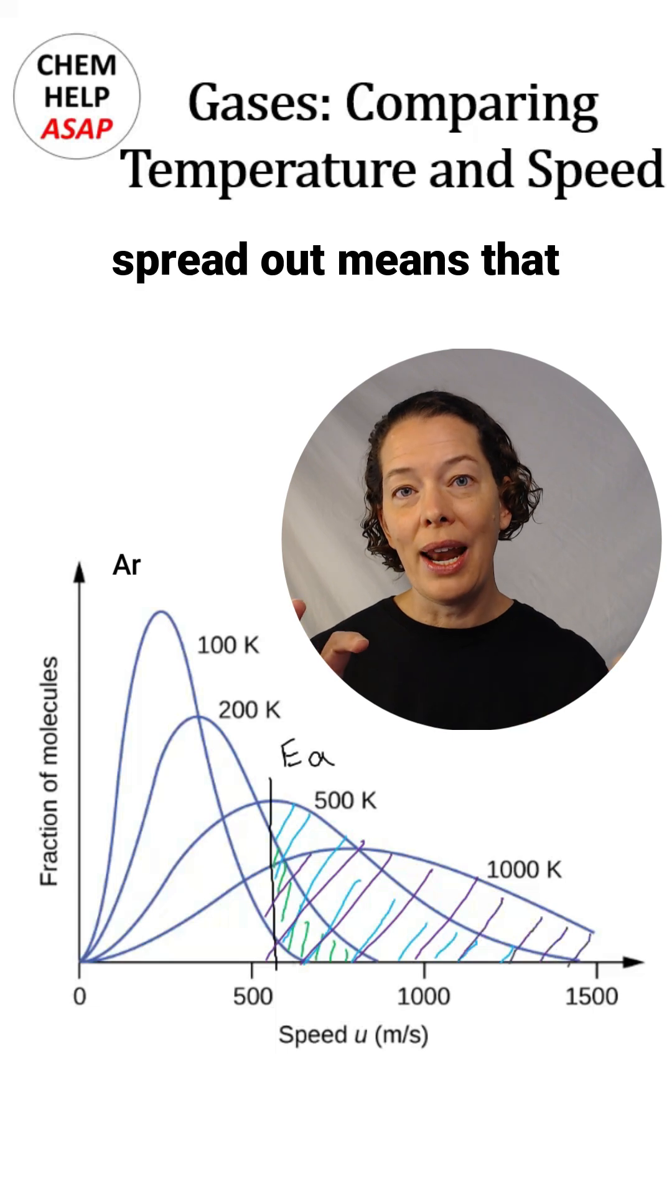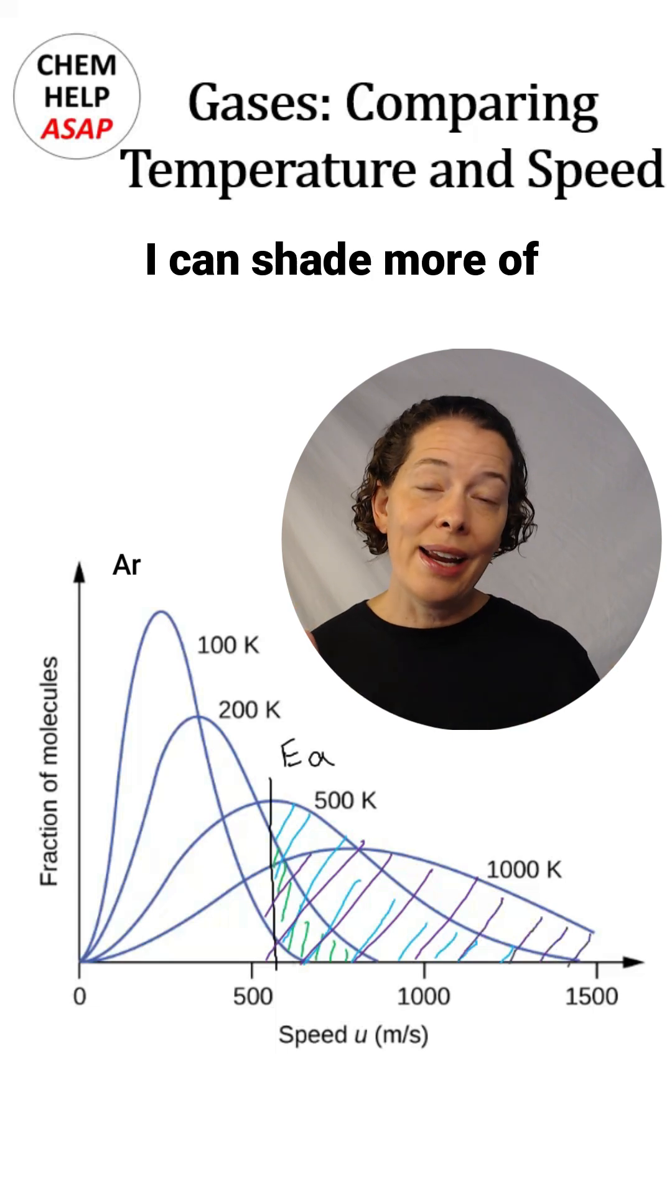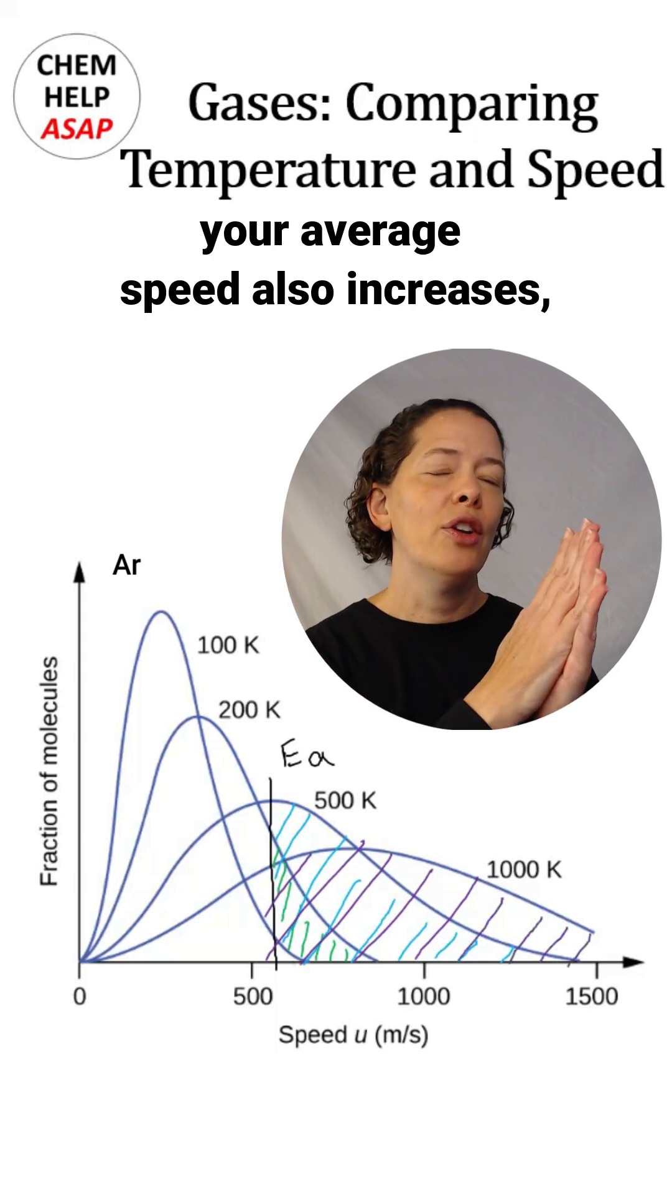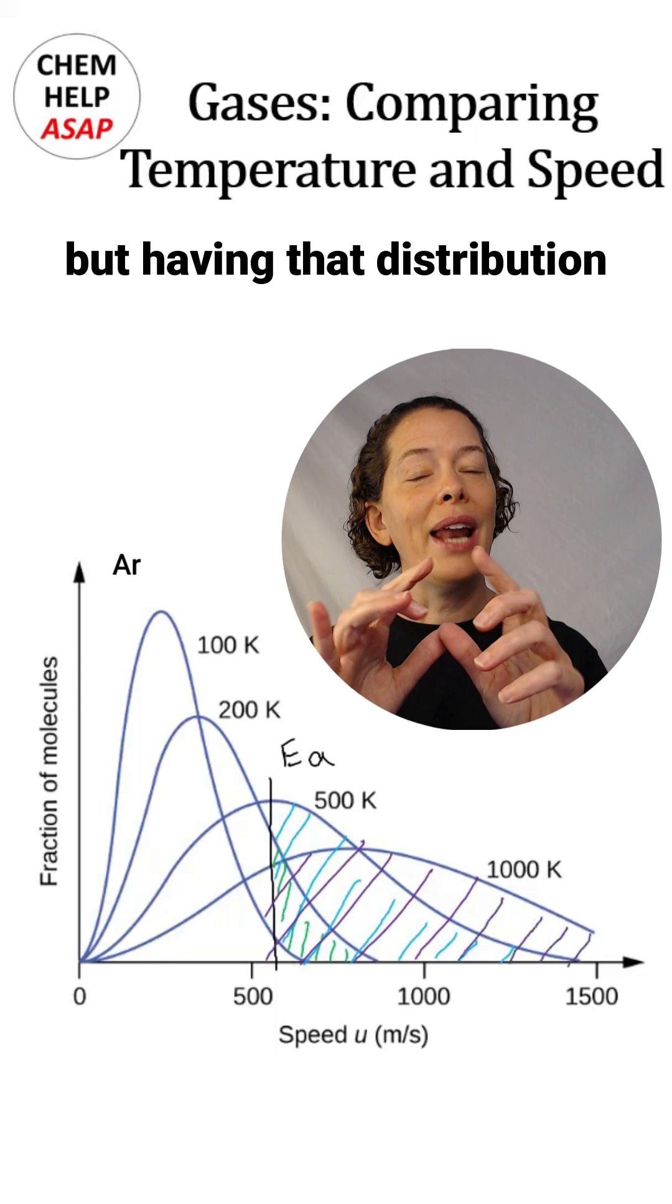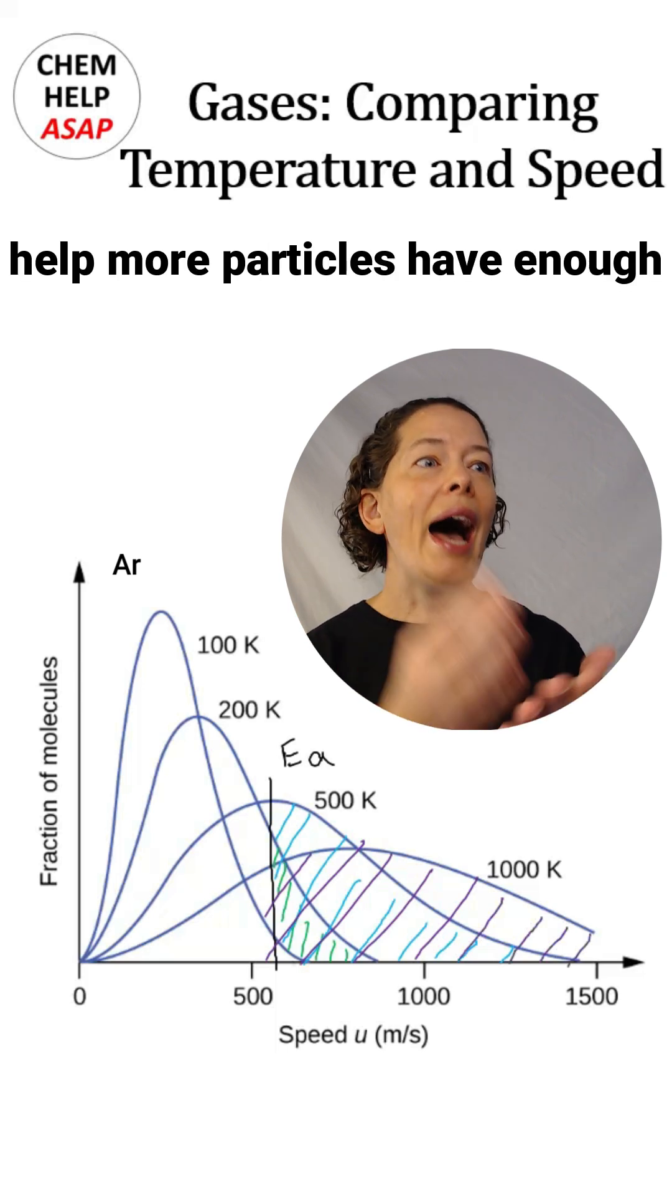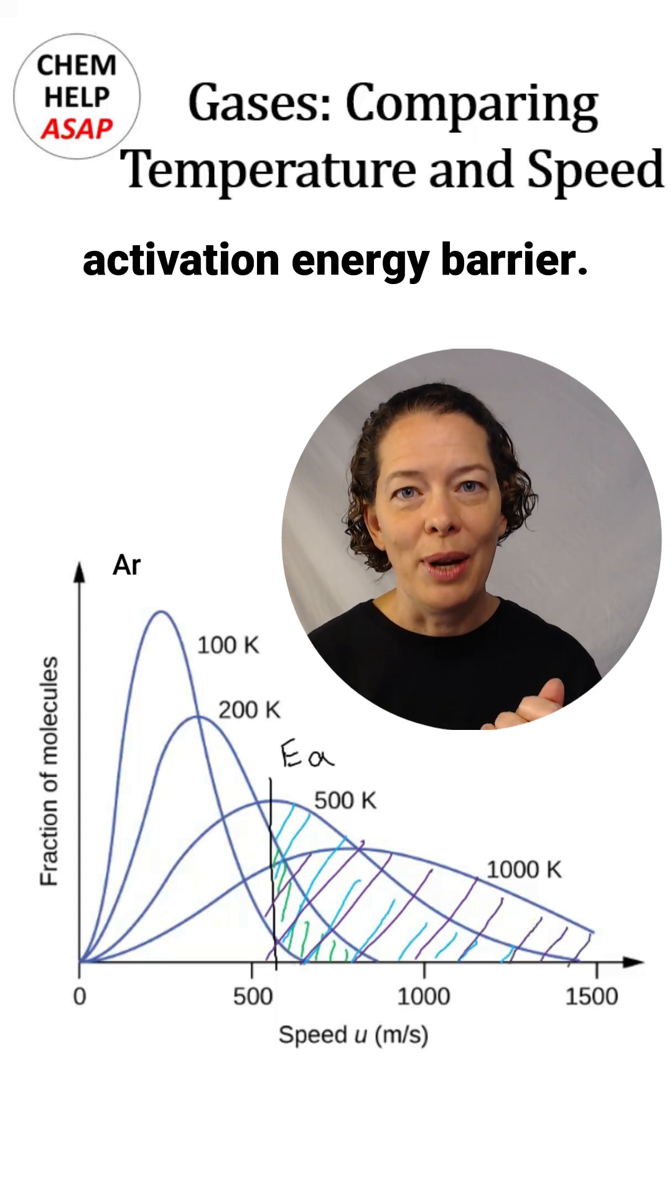Having that distribution spread out means that I can shade more of those curves as well. So it's not just that as temperature increases, your average speed also increases, but having that distribution spread out will also help more particles have enough energy to get over that activation energy barrier.